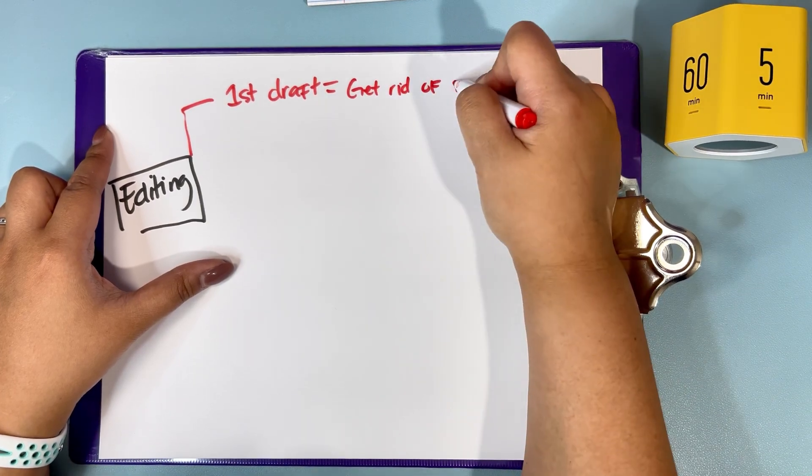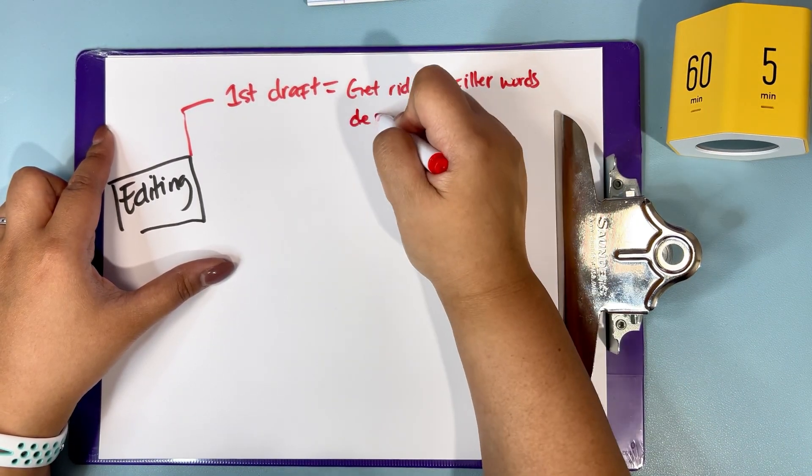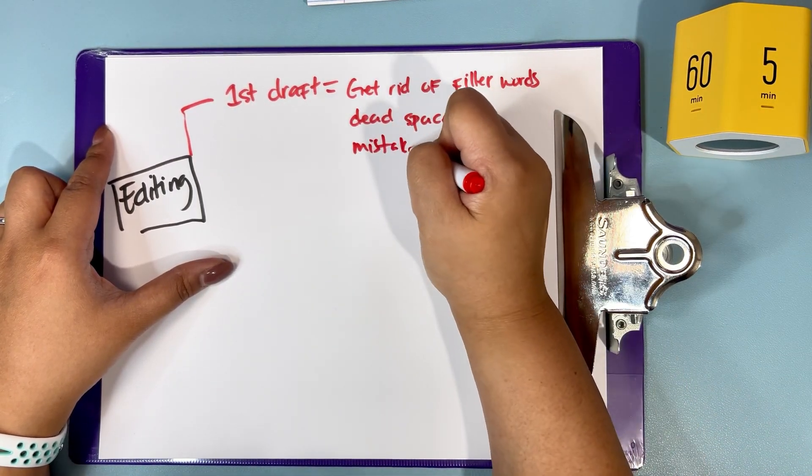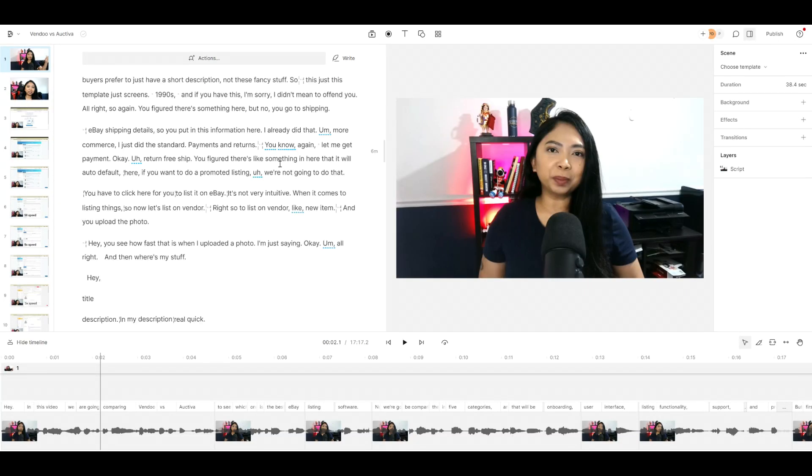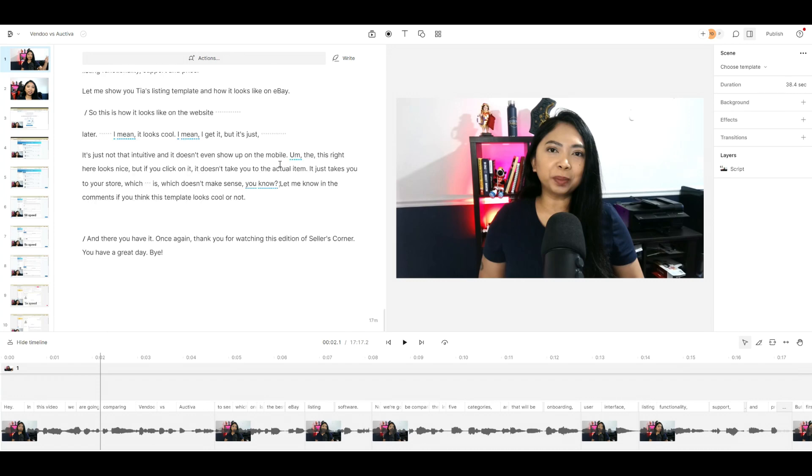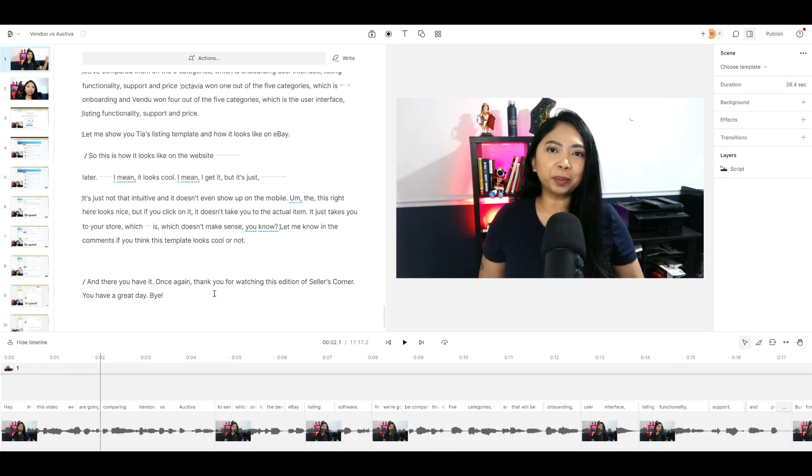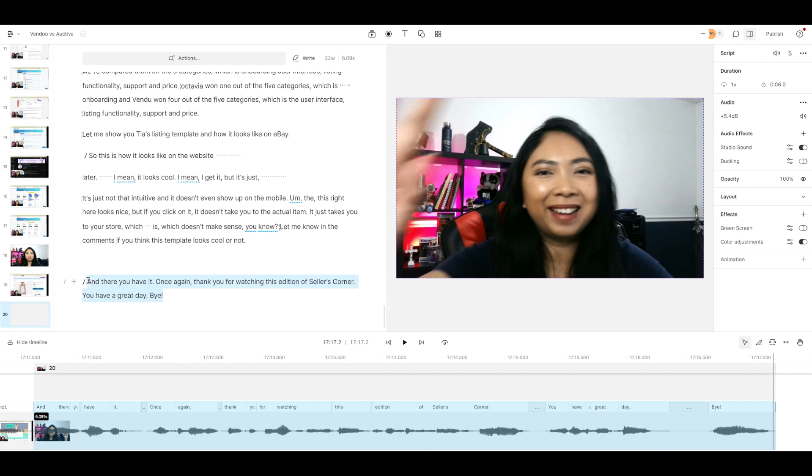In the first draft, I remove filler words, dead spaces, and mistakes. It's a quick edit. I actually use Descript to edit my videos. As someone who has a hard time hearing and prefers closed captions, editing with a traditional software like DaVinci or Final Cut Pro was too slow for me.